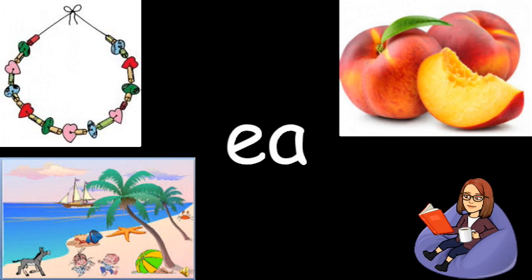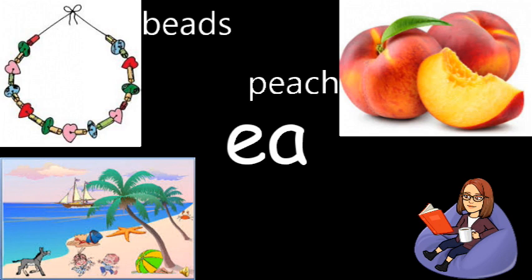Okay, so we're going to start with our EA grapheme and the sound we're looking at first is the E sound. Now my favourite rhyme when it comes to this is: when two vowels go walking, the first one does the talking. So because the E is first in this grapheme we say its name, we say E. So let's have a look at the pictures we've got. We have got a lovely necklace of beads, and we have got a nice juicy peach.